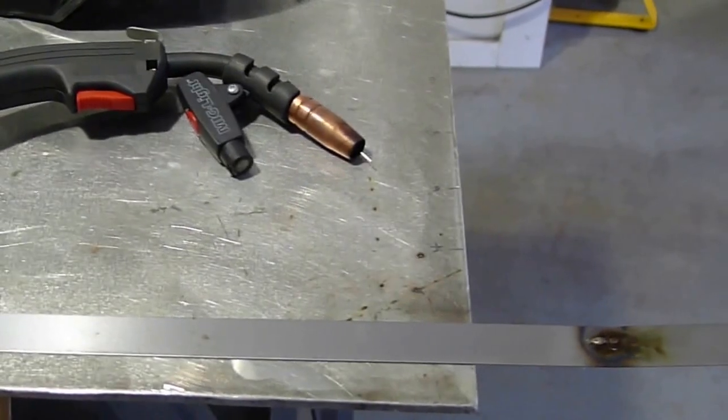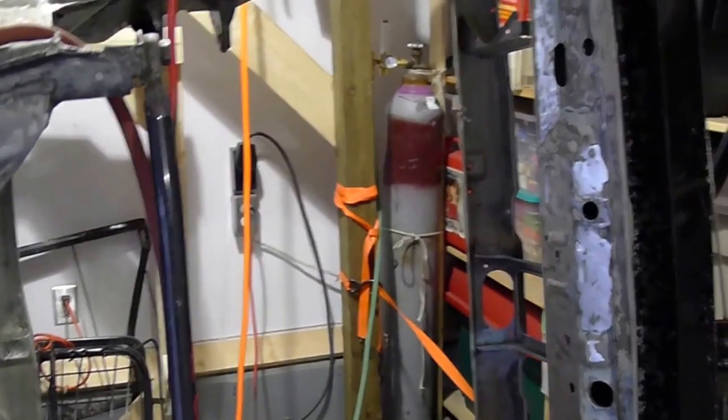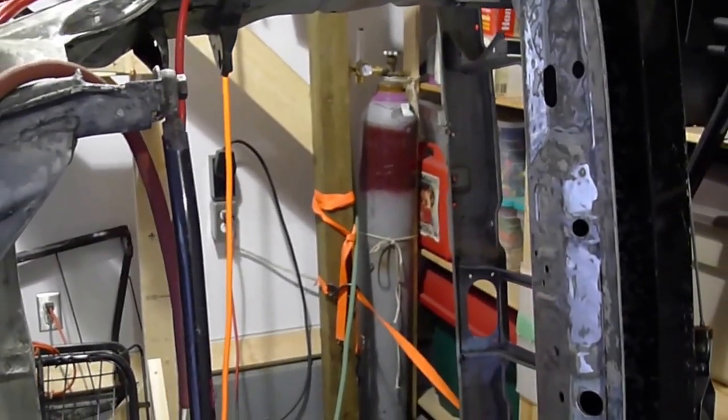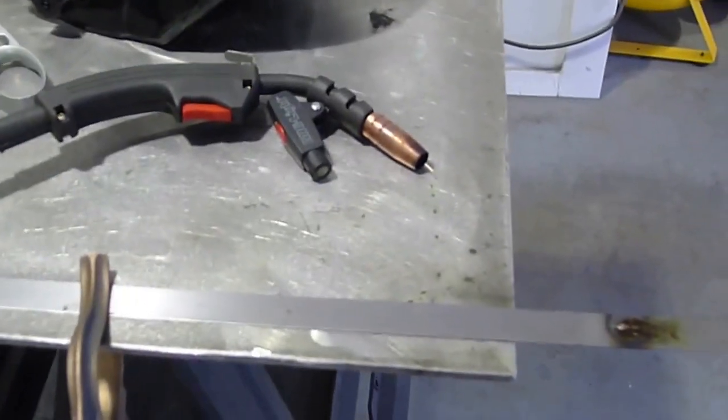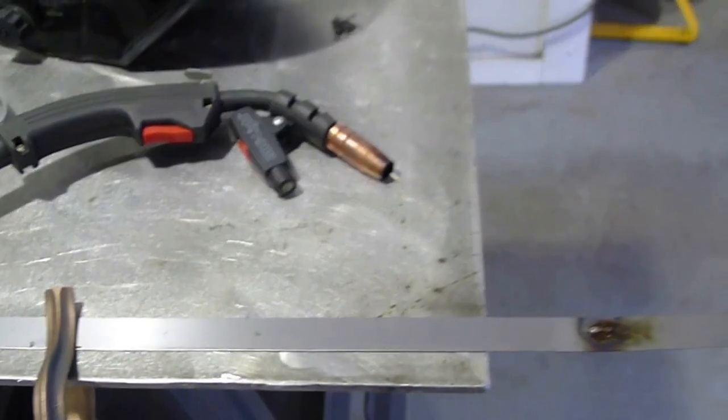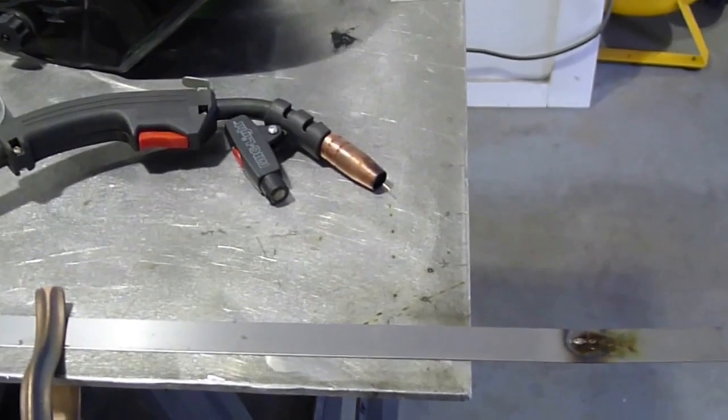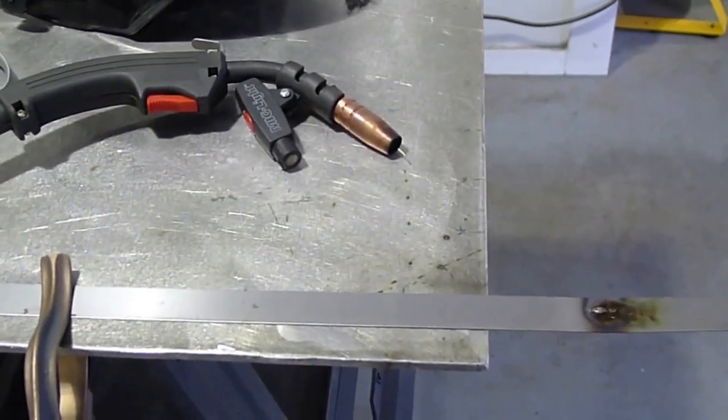I'm running my tank in the corner over there, that tank is just C25, so it's 75% argon 25% CO2. You're supposed to run 100% argon with brazing, that's the recommendation, but lots of people on the internet say you can get away with C25 and I'm using it and having no trouble at all.